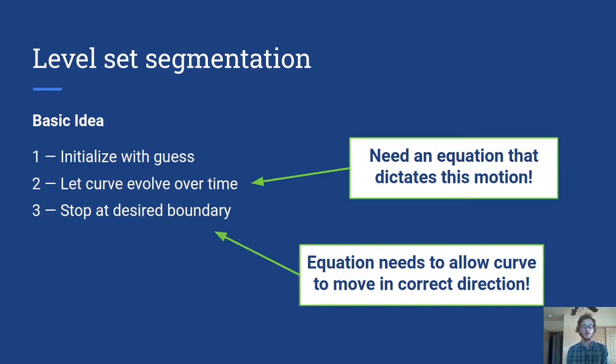So we need a couple of things. We need an equation that tells the curve how to move, but that equation also needs to be flexible so that we can tell it to move towards boundaries of objects that we want it go towards in the image.